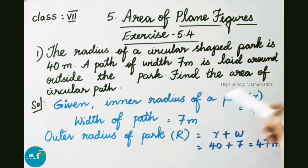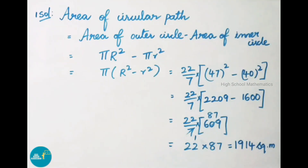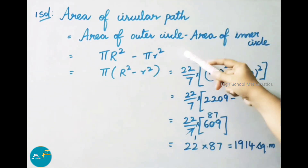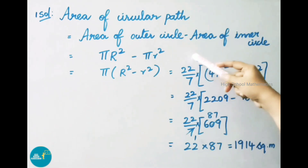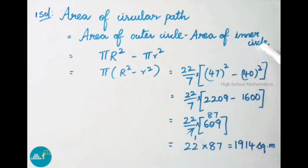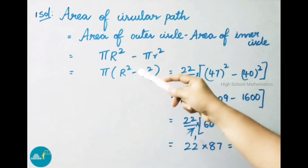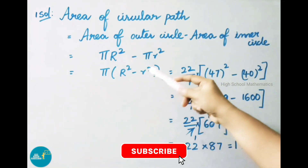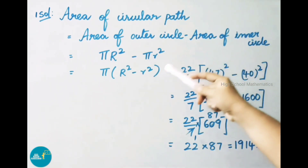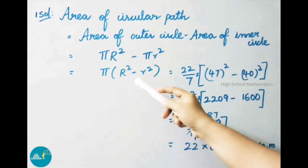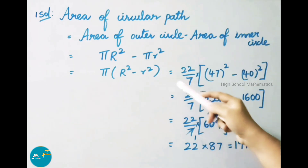Now we have to find the area of the circular path. Area of circular path = area of outer circle minus area of inner circle = π·R² − π·r². Taking π as common: π(R² − r²).